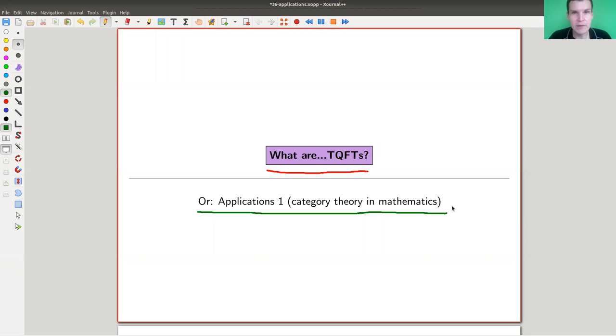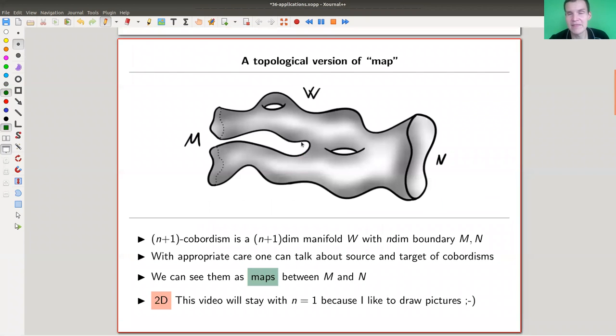Because topological quantum field theory is a mouthful, we're going to just go with TQFT. I will explain what those are and you will see how they could be applied in topology mostly. As I said, they arose in physics. And the starting point here is this topological version of a map, which is a cobordism. So in this picture, it would be the W thing.